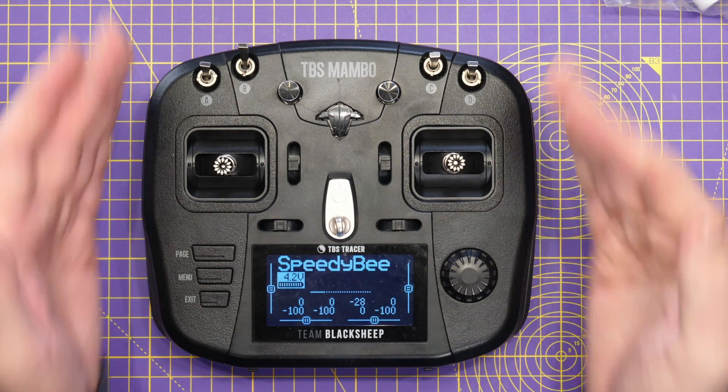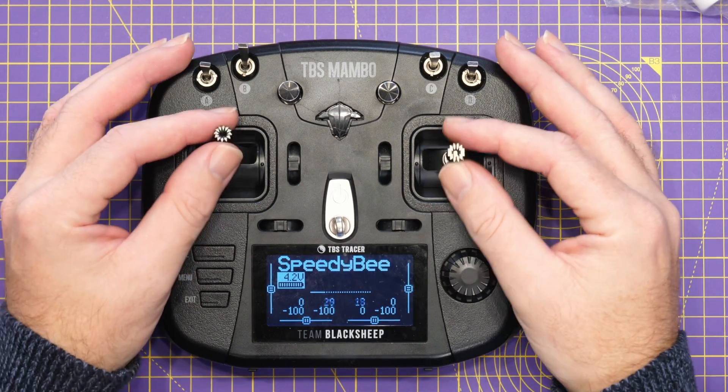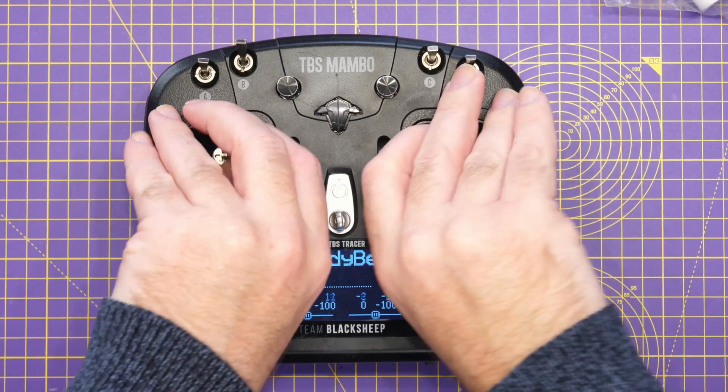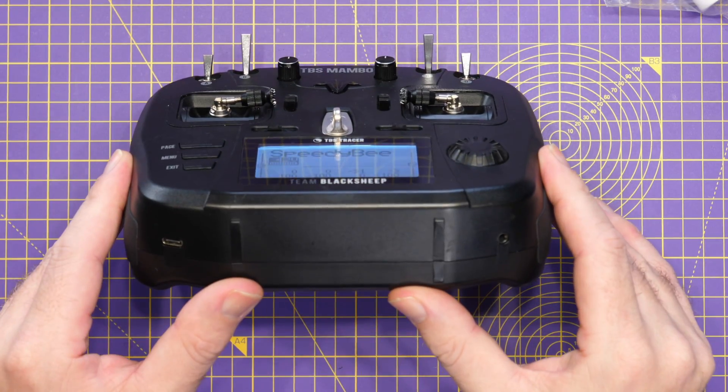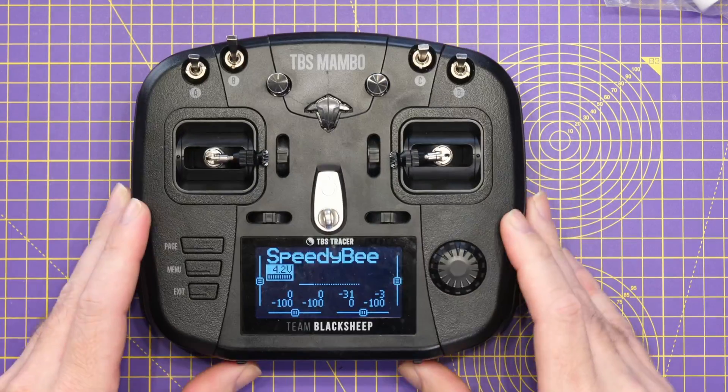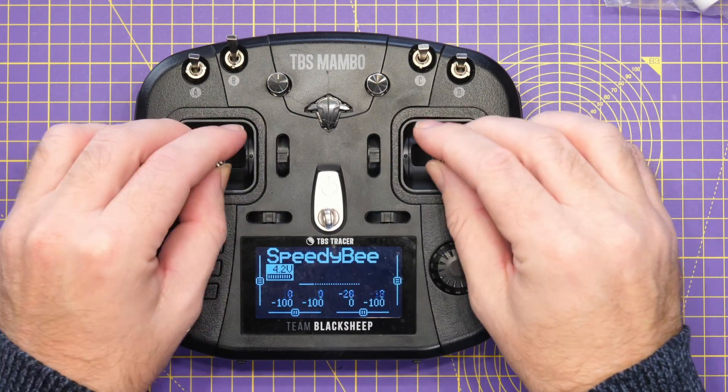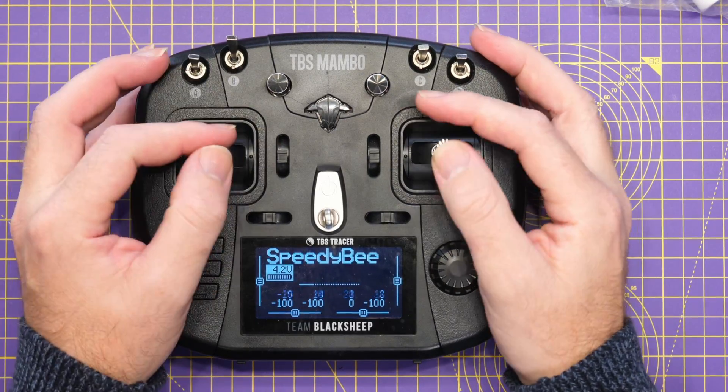But my advice would be if you're going to do it go for the pros. You're getting that folding gimbals. You can pop that up and fold the sticks down. That way you're at least adding some additional protection to your radio at the same time as getting the new gimbals.